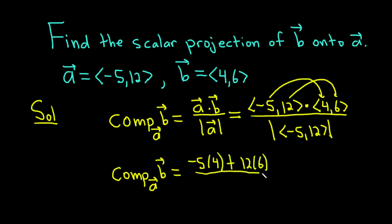This is divided by the magnitude on the bottom. We take the square root, and you square each component and add. So it's negative 5 squared plus 12 squared.